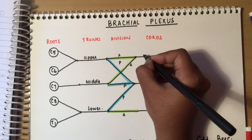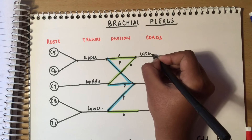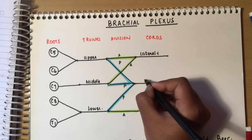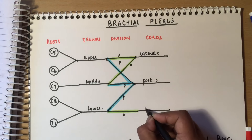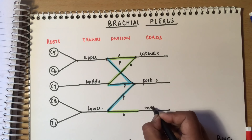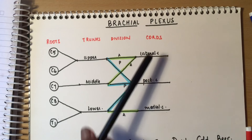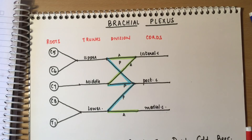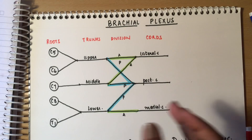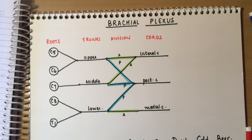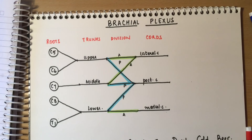So this is your lateral cord, this is your posterior cord, and this is your medial cord. The naming — the nomenclature — is because of the placement of these cords around the axillary artery. That will be easier to understand if I show you a cut section of the arm at the axilla.